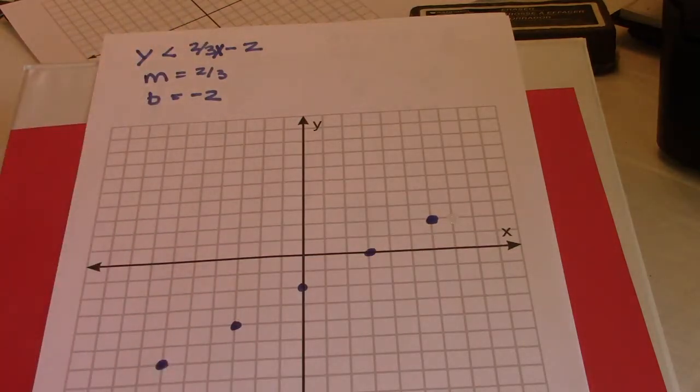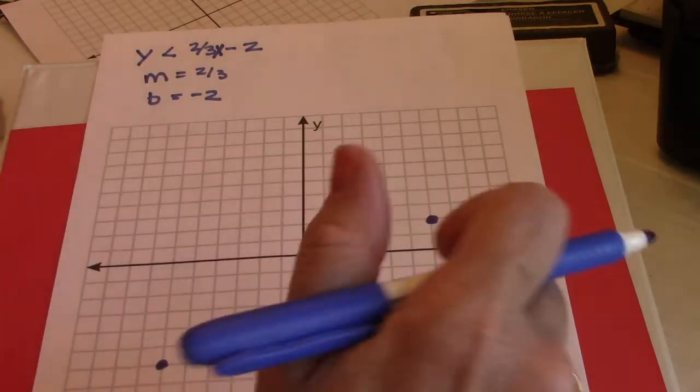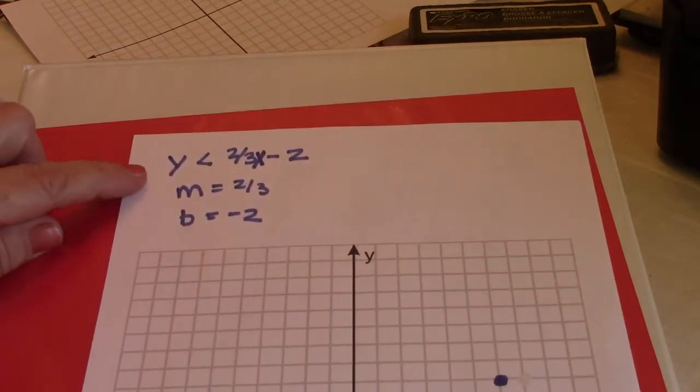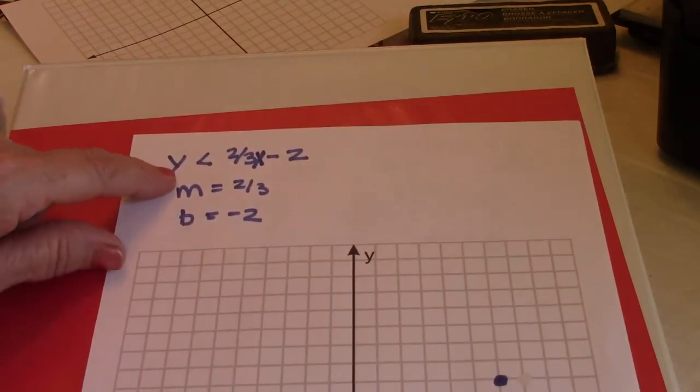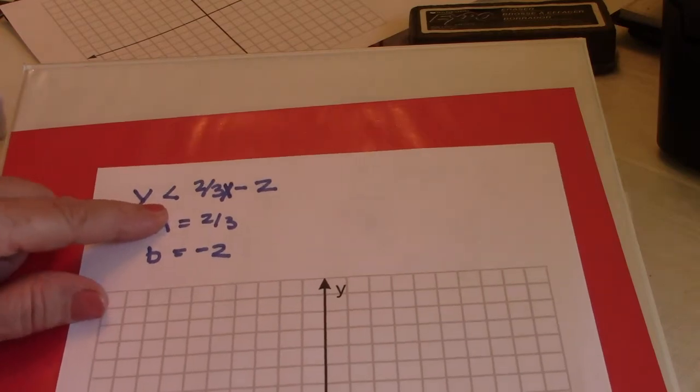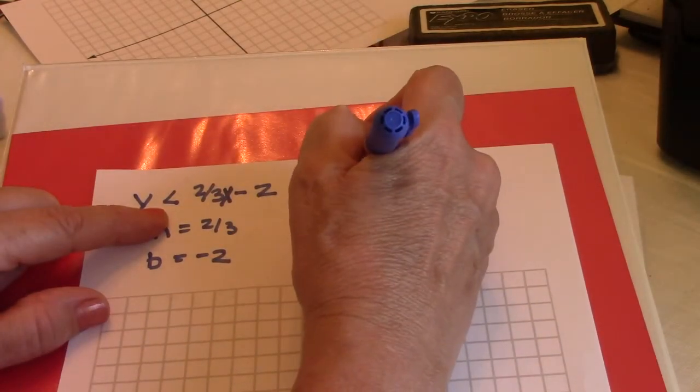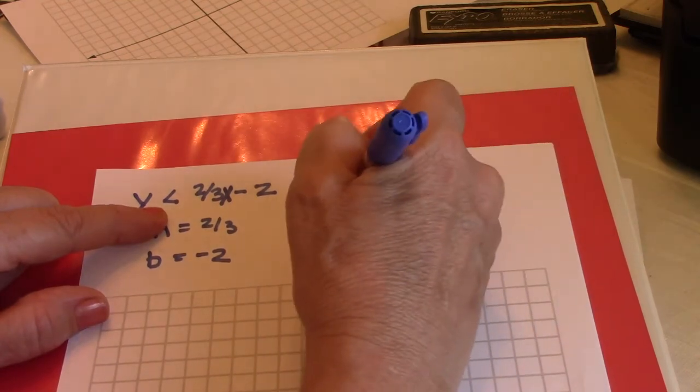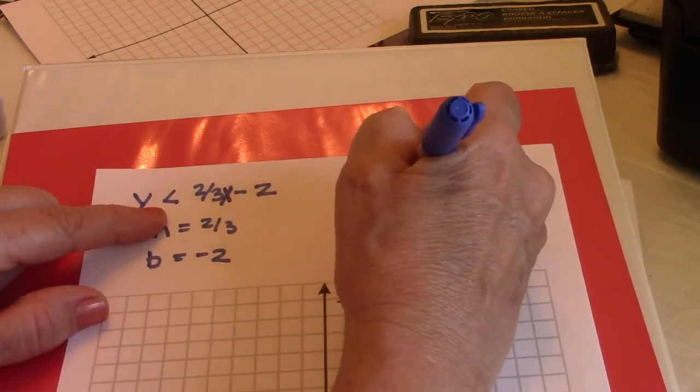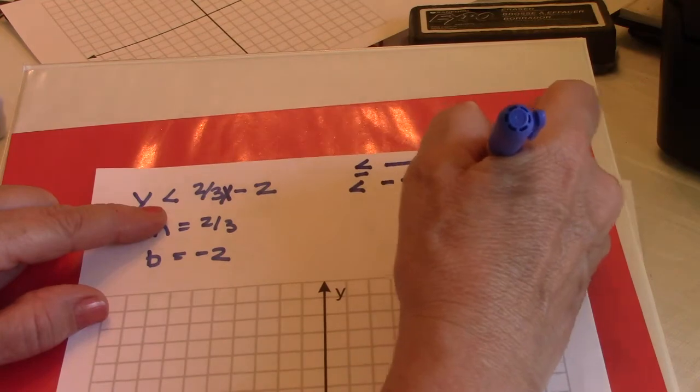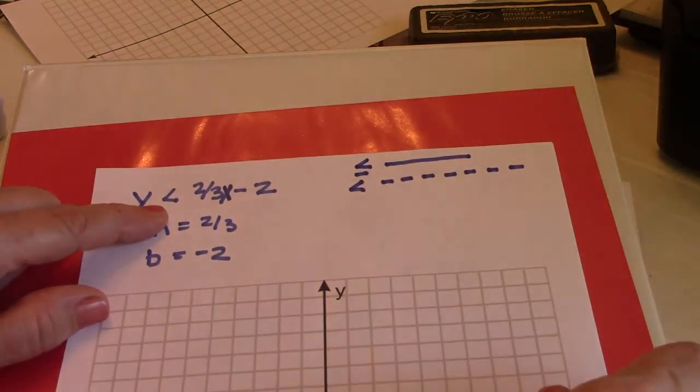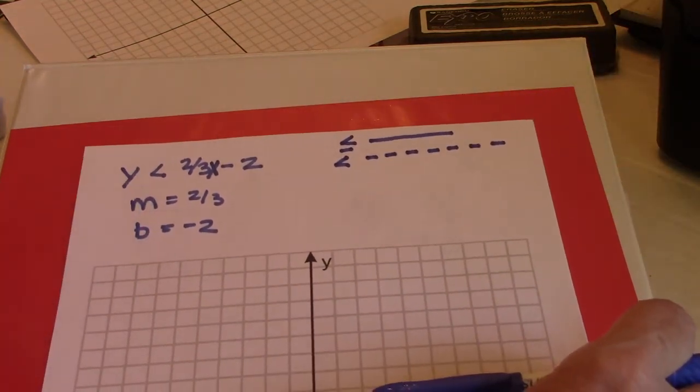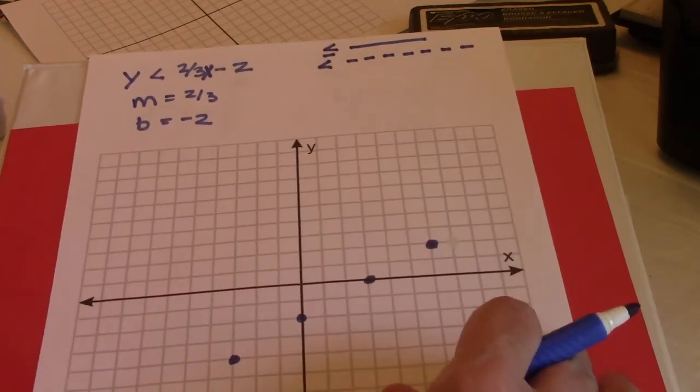Alrighty, so my original equation says y is less than. Now in your lesson you'll see that if it was less than or equal to, the line will be a solid line, but if it's just less than, it's going to be a dashed line. That means that the actual line we're drawing will not be part of the solution.